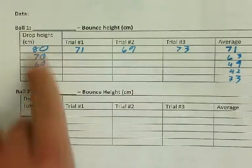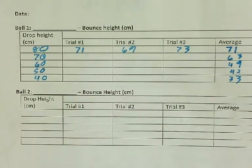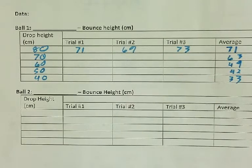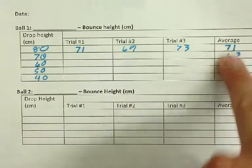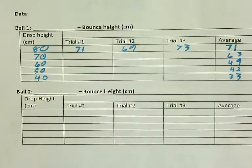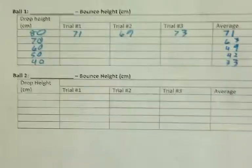Again, I started. I got my drop heights, I got my trials, I averaged them together, and then I found my average for each of those. Do that for ball one, do that for ball two. Okay, I'll give you a second to do that.